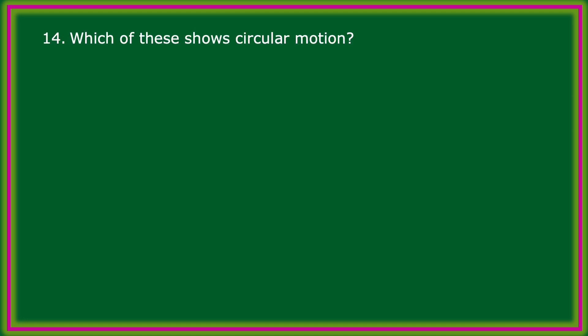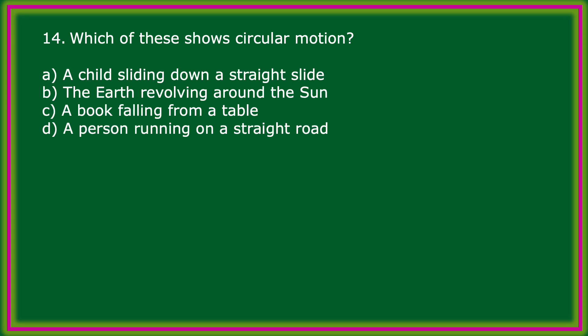Which of these shows circular motion? Options: a child sliding down a straight slide; the earth revolving around the sun; a book falling from a table; a person running on a street road. The correct answer: the earth revolving around the sun — this is an example of circular motion.